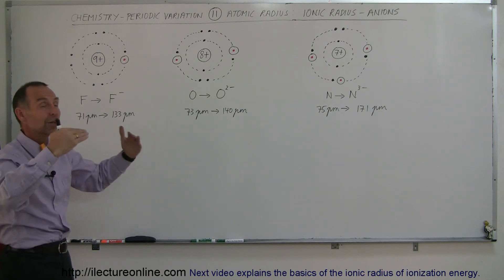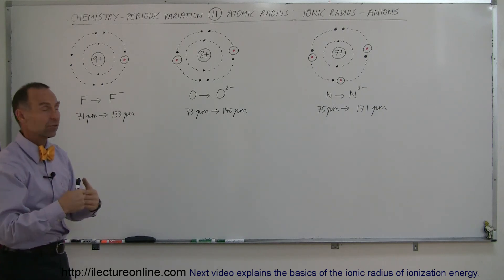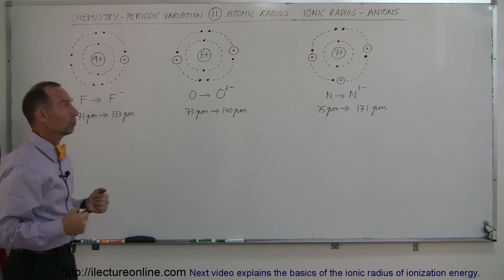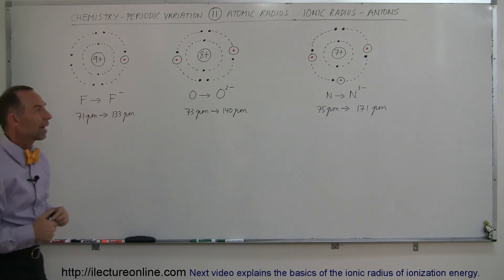So anions can become very large ions through the fact that there's less positive charge in the center, and more electrons being repelled by one another, pushing the size of the ion out.